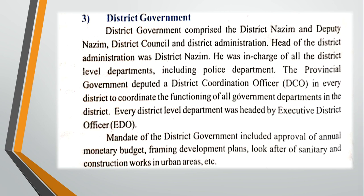He was in charge of all the district level departments, including the police department and the provincial government. The deputy district coordination officer, DCO, coordinated the functions of all government departments in the district. Every district level department was headed by executive district officers, EDO.